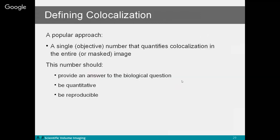All these results show there's no simple way to define co-localization. It depends on what definition makes sense for your research question and the structure you are labeling. For example, if I know my molecule of interest should be within the nucleus, I wouldn't count signals outside the nucleus or cell membrane. A popular approach for co-localization analysis is to calculate a single number — a coefficient — based on pixel values from the entire image or an area of interest.